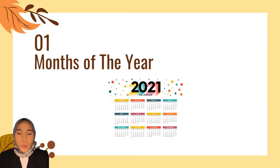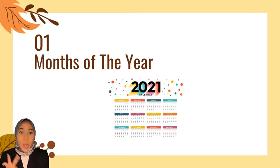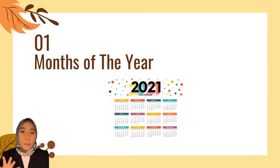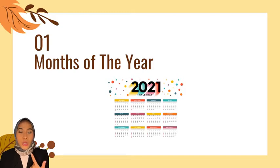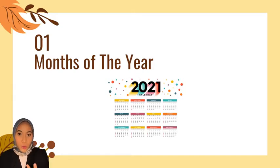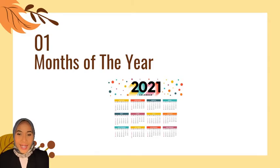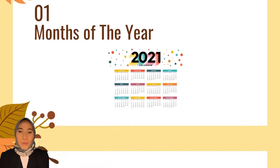For the first lesson, we have months of the year. There are 12 months in a year. They are January, February, March, April, May, June, July, August, September, October, November, and the last one is December.